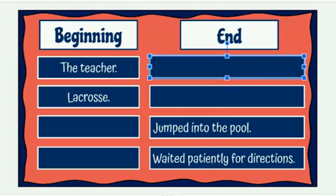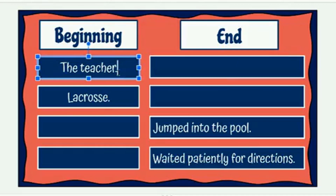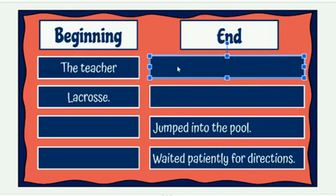Let's try one. In the first sentence we have here, we have the words 'the teacher' as the beginning. What we'll need to do first is eliminate the period. We know that just the words 'the teacher' don't make a complete sentence. Then we'll have to go over here and add an ending.